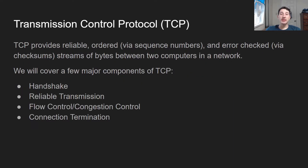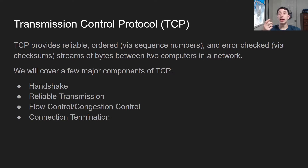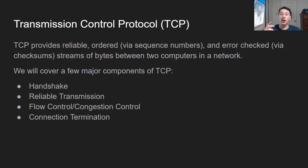TCP basically provides reliable, ordered, and error-checked streams of bytes between two computers on the network. It uses sequence numbers to deal with ordering, and checksums — basically every self-contained amount of bytes should have the sum of those bytes, so that if something along the network causes one bit to flip, it alerts you that the checksum is incorrect and there's an error in the message. The mechanisms through which TCP makes these guarantees are: handshake, reliable transmission, flow and congestion control, and connection termination.